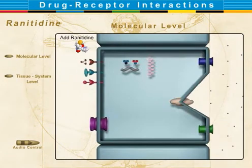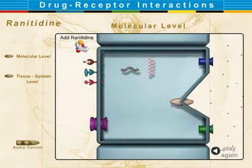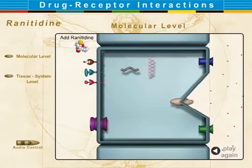Acid secretion by gastric parietal cells initially involves stimulation of histamine, acetylcholine, and gastrin receptors shown on the interstitial basolateral surface of the parietal cell. Stimulation of these receptors triggers a sequence of events. Water and carbon dioxide inside the cell, under the influence of carbonic anhydrase (shown as curly gray), form protons (red) and bicarbonate. The bicarbonate exchanges for chloride on the interstitial surface through a chloride-bicarbonate exchanger.